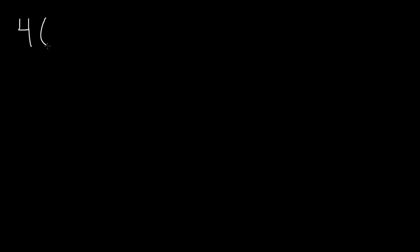Now let's do some examples. We have 4 times 3. As you can see, 4 is a positive number, and so is 3. So when you multiply two numbers with the same signs, the product is going to be positive. So 4 times 3 is 12. Our answer is positive 12.